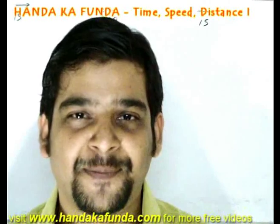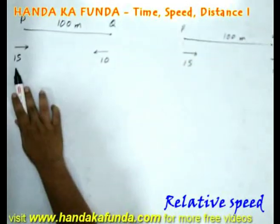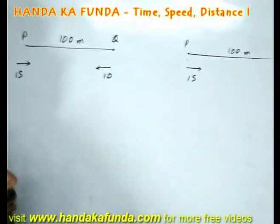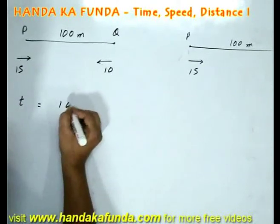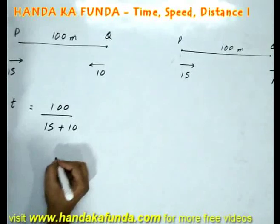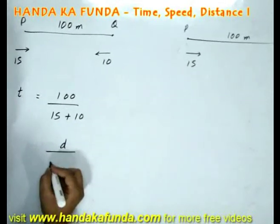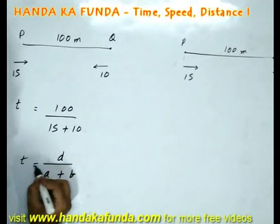Let us talk about relative speed. Say, two people start from P and Q at the same time with speeds of 15 and 10. The distance between P and Q is 100 meters. Then, the time taken by them to meet will be 100 by 15 plus 10. The point that I am trying to make, to cover a distance D with two speeds A and B towards each other, the speeds get added up or it becomes D by A plus B.